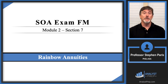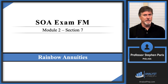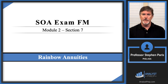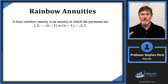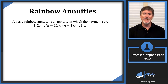In this video we're going to talk about a certain type of annuity called rainbow annuities. These annuities tend to show up pretty frequently on actual exams, and I'm going to show you a formula that I suggest you commit to memory — it'll save you a lot of time. A rainbow annuity is one in which the payments are 1, then 2, then 3, up to some value n, and then they start decreasing. So the payments increase and then decrease, reaching a peak at n — this is an n-peak rainbow annuity.